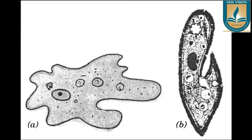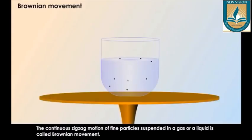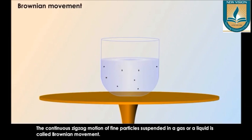Circulation in protozoans is very simple. The movement of the cytoplasm brings about the movement of nutrition in its body and even helps in excretion. Just like the movement of currents in the ocean, the movement of ocean currents is similar to the motion of cytoplasm, and this movement is called Brownian movement.